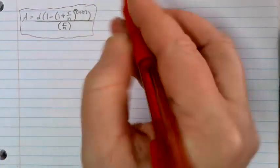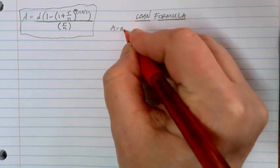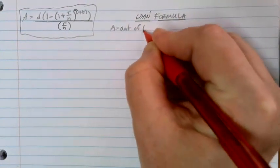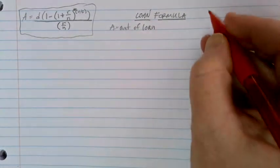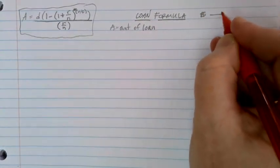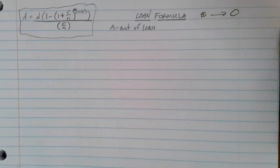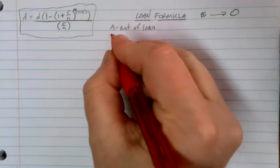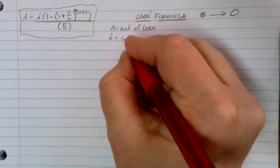So this is our formula. In this case, A is the amount of the loan. This is the lots of money up front, and we hope to have zero owed at the end. And D is our regular payment.